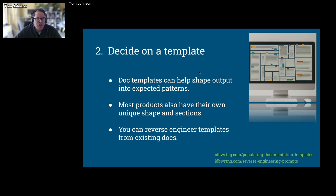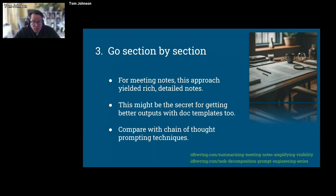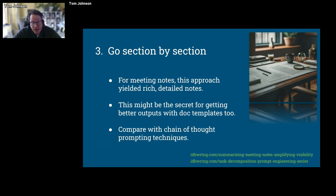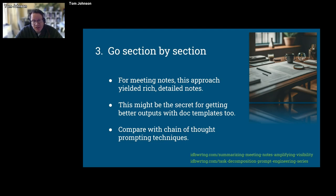Moving on to the third step: go section by section. This is my biggest revelation about how to use LLMs. I first discovered this when I was trying to clean up meeting notes — a transcription of maybe five to ten pages of verbatim content. I initially tried just having AI clean it up, but the outputs were always really short, like 500 words. The meeting was a lot longer — there was more detail. Why was it all being truncated? Well, the output of a lot of LLMs has a limit — it varies by tool, model, and how long each model can generate output. But if you go section by section, you will get much richer detail.